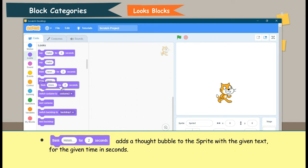Think Hmm for 2 seconds adds a thought bubble to the sprite with the given text for the given time in seconds.